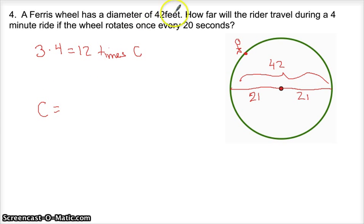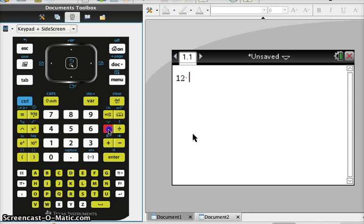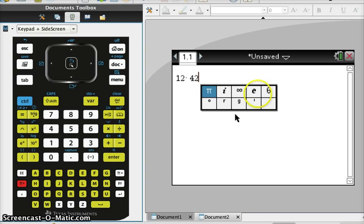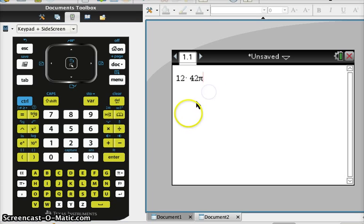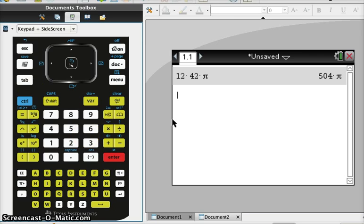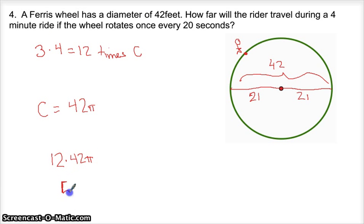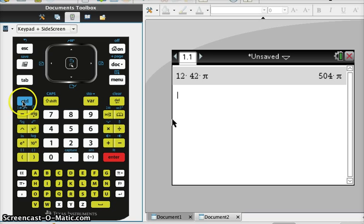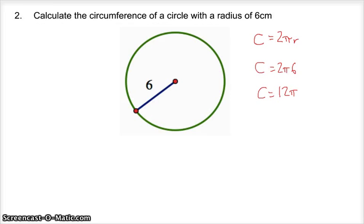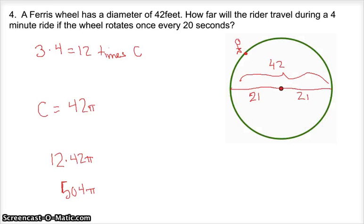The circumference is 42 times π, or 21 times 2 times π. We said 12 of those. 12 times 42π. The calculator doesn't mind operating in π, so we just say 504π. If you wanted a decimal, which I don't right now, but if I went Control-Enter, it would give me a decimal for that. So there you have it, you decimal people that really like decimals.